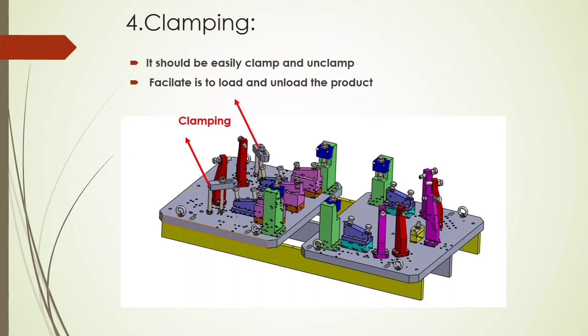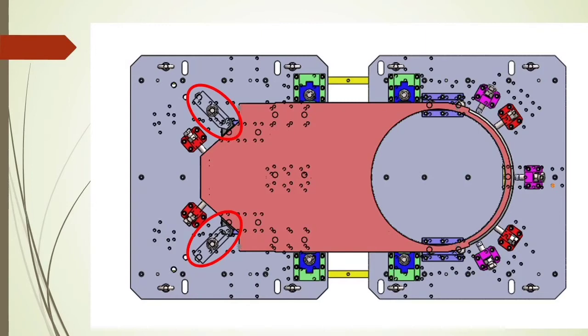Clamping is used to fix our product during the machining process and to load and unload the component easily. There are various types of clamping available, like hydraulic and pneumatic clamps. The highlighted regions show the clamps.